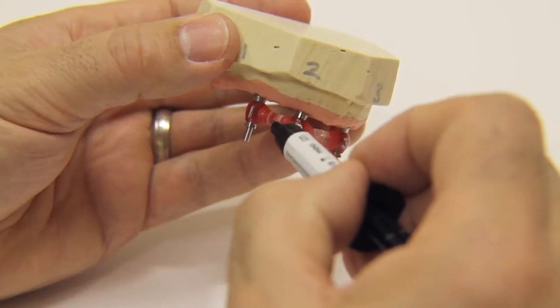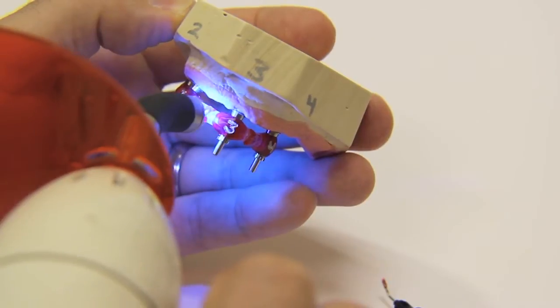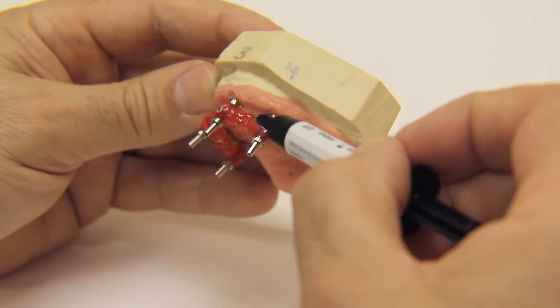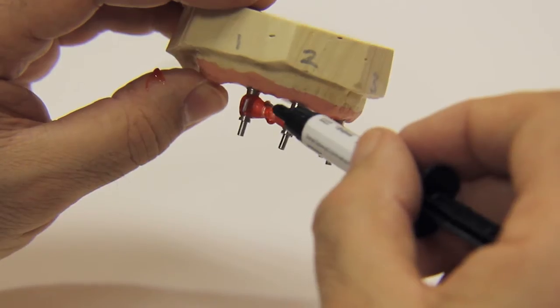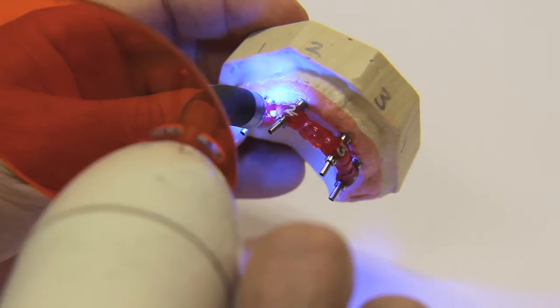Generously apply additional material to ensure optimum strength of the jig. Light cure, then apply additional material all around the jig. Light cure one final time.